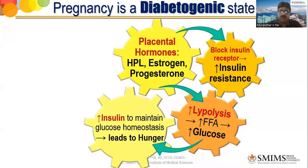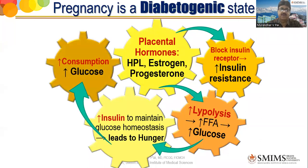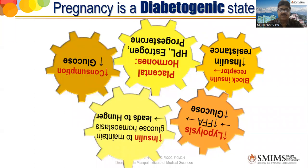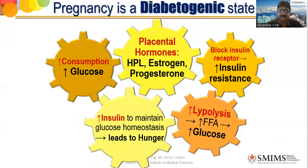Increasing glucose obviously demands more insulin to maintain glucose homeostasis, but that leads to hunger and the patient tends to eat more. When she eats more, glucose increases again, and the whole thing circulates like a vicious circle.